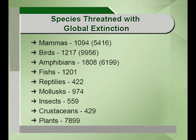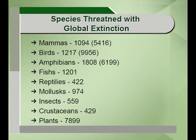Many species have become extinct, while these are the number of species which are threatened — meaning they face the danger of becoming extinct. They are not yet extinct but are present in smaller numbers. Out of a total of 5,460 species studied, the threatened numbers are: mammals 1,094, birds 1,217, amphibians 1,808, fish 1,201, reptiles 422, molluscs 974, insects 559, crustaceans 429, and plants 7,899.